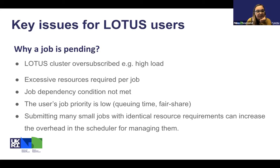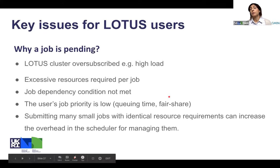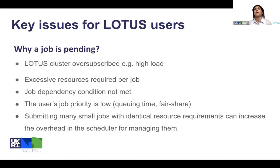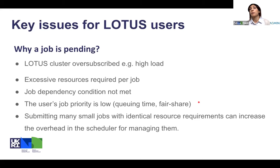Jobs may be pending during high load periods when demand is high and resources aren't available. Other reasons include jobs requesting resources not available on any single node (e.g., 64 cores on one node), unmet job dependency conditions, and the fair-share priority calculated by the scheduler based on job age and queuing time. Submitting millions of very small jobs at once can also cause overhead for the scheduler in managing and allocating resources.